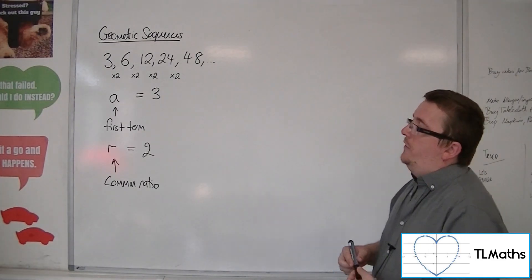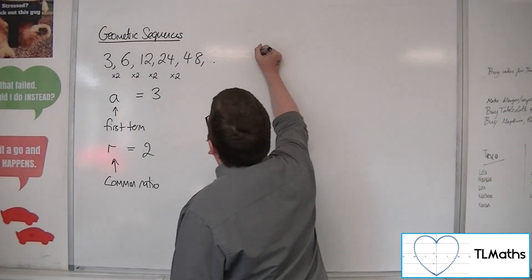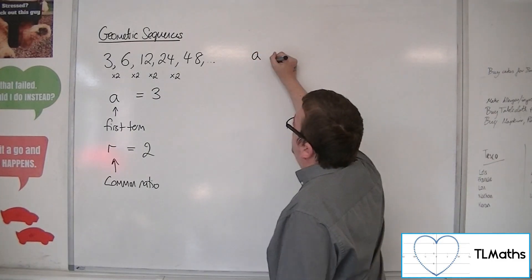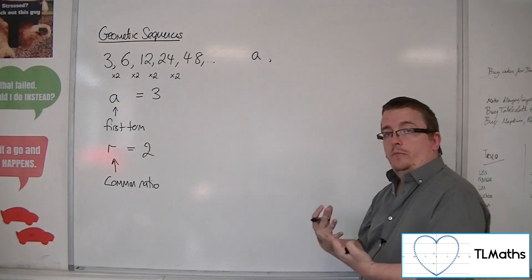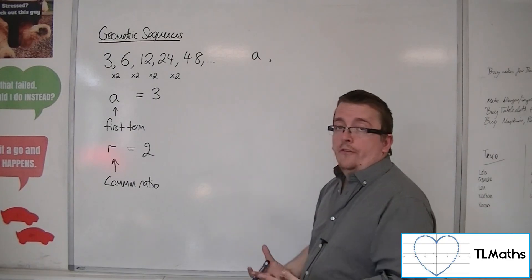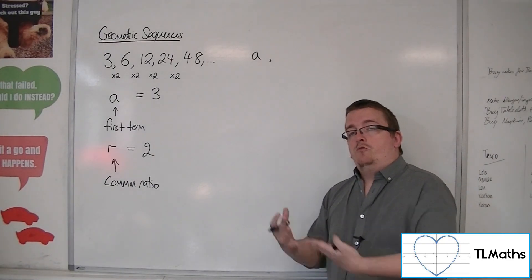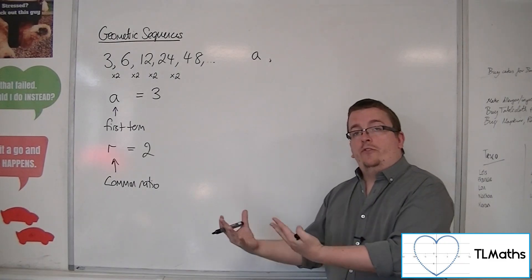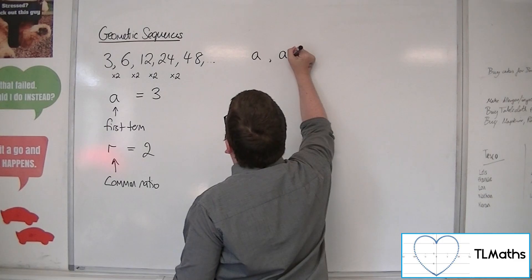So if we were going to write this in general terms, for a geometric sequence we have this first term a. And then the second term is a times whatever r is. Now r could be a half, for example, so you could be dividing by 2 each time. But rather than dividing by 2, we can write times by a half. So the second term is a times r.